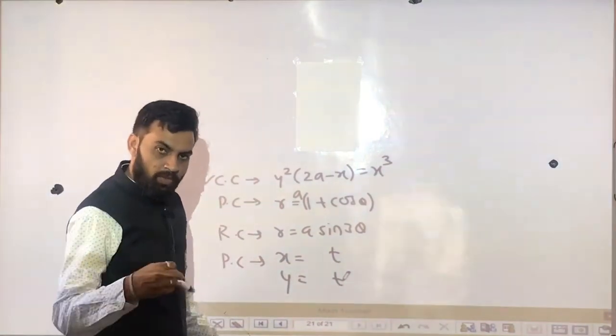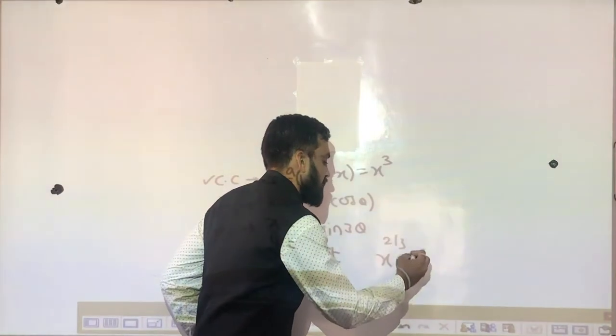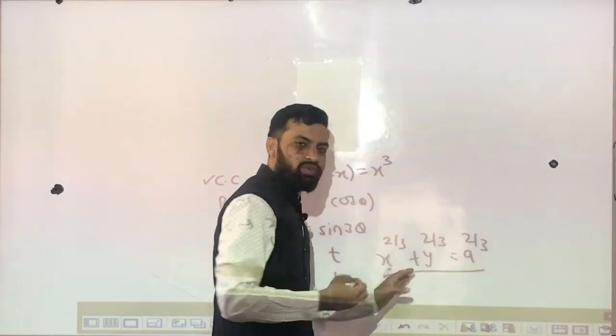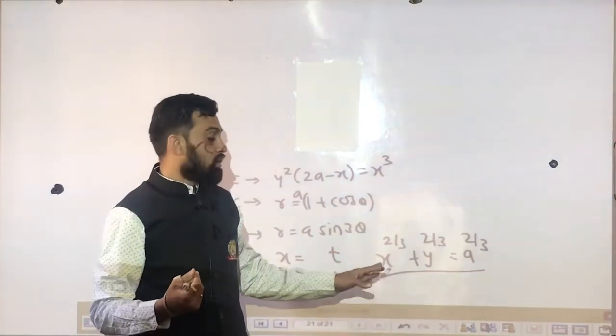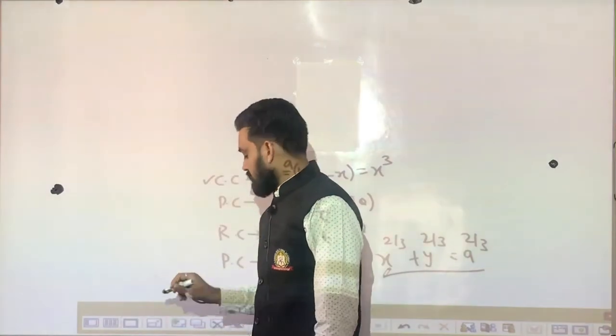There are two examples, there are some examples. x is equal to 2 by 3, y is equal to 2 by 3, a is equal to 2 by 3. Okay? So then?